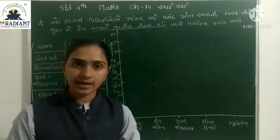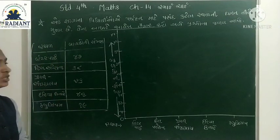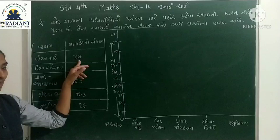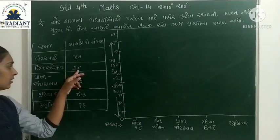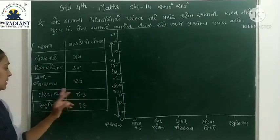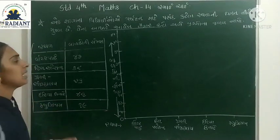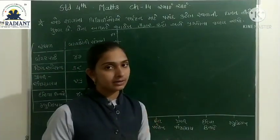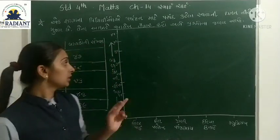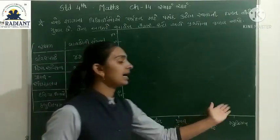આલેખ તૈયાર કરવાનો છે. સ્થળ અને ત્યાં જનારા બાળકોની સંખ્યા: વોટર પાર્ક 44, હિલ સ્ટેશન 38, પ્રાણી સંગ્રહાલય 26, દરિયા કિનારો 42 અને મ્યુઝિયમ 19. આ માહિતીના આધારે આલેખ તૈયાર કરીશું અને પ્રશ્નોના જવાબ આપીશું.